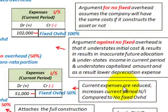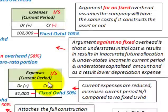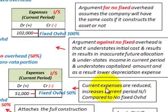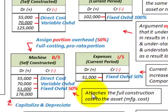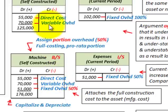With this approach, current expenses are reduced compared to assigning no overhead, which increases current net income — lower expenses, greater net income. When assigning a portion of overhead, that attaches the full construction cost to the asset. With no fixed overhead you get a lower machine cost of $125,000, compared to $176,000 when you assign a portion of overhead.